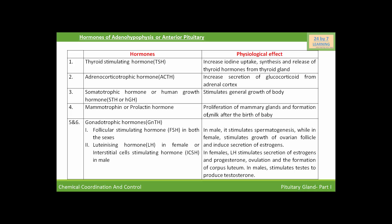The next hormone is prolactin. Prolactin regulates the growth of the mammary gland and milk production. Prolactin stimulates the proliferation of mammary glands and the formation of milk after the birth of the baby.